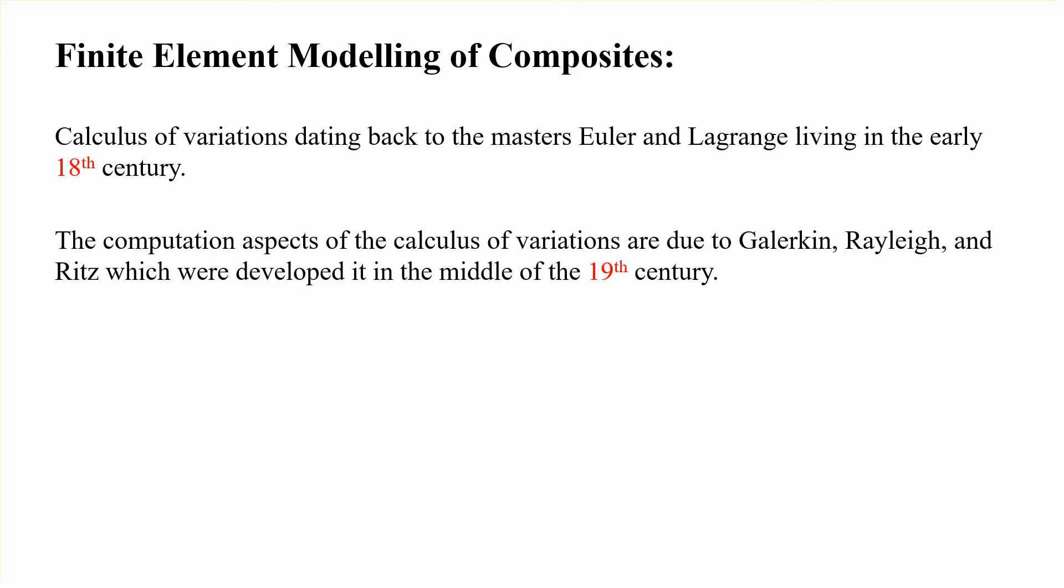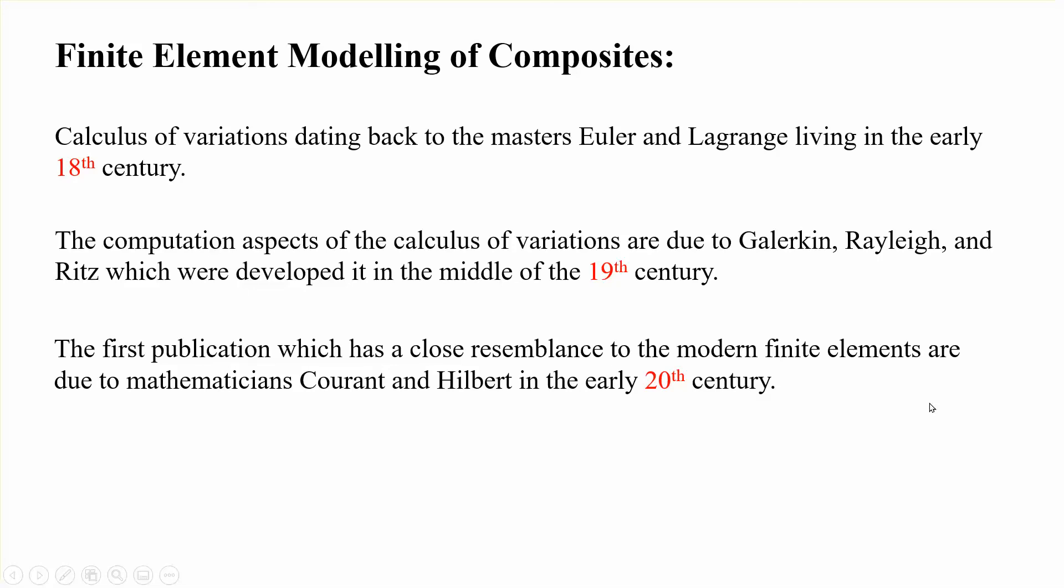In the 19th century, people like Galerkin, Rayleigh, and Ritz, they used this calculus of variation and computations together to come up with some approximate solutions.